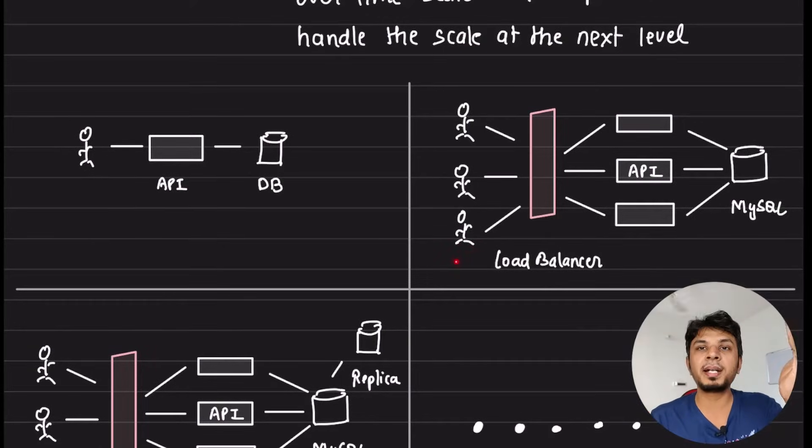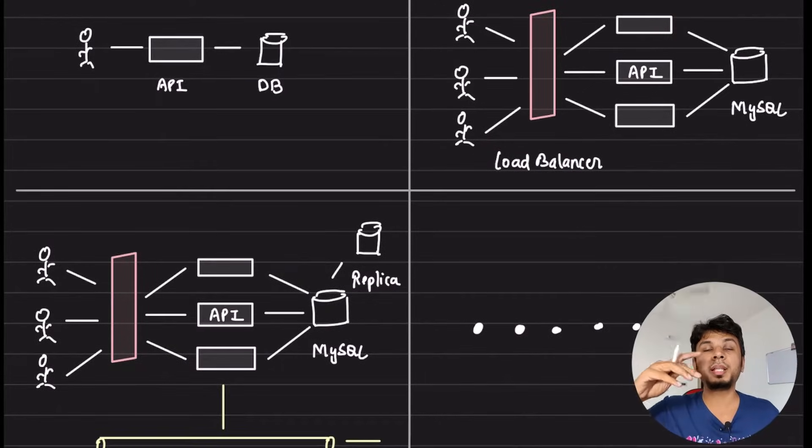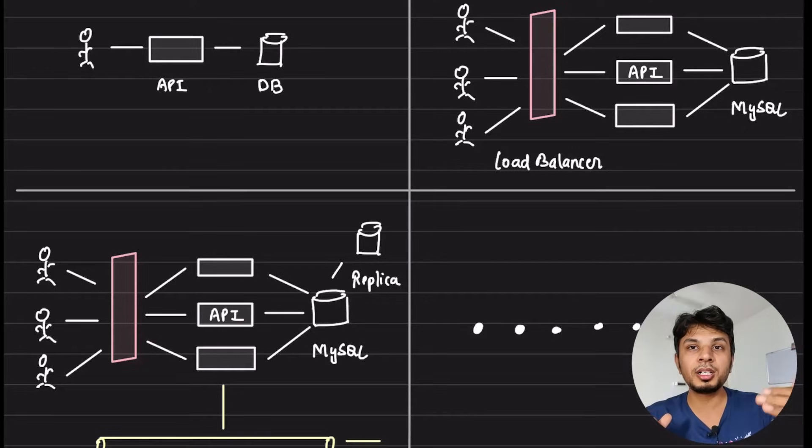Now you hit the next scale. You got multiple users. So if you got multiple users, one API server might not be able to handle it so you add a load balancer.